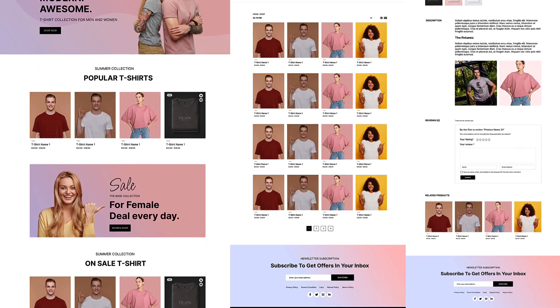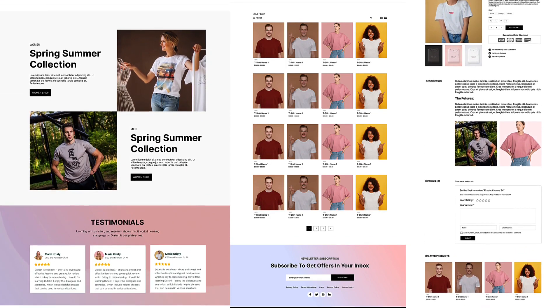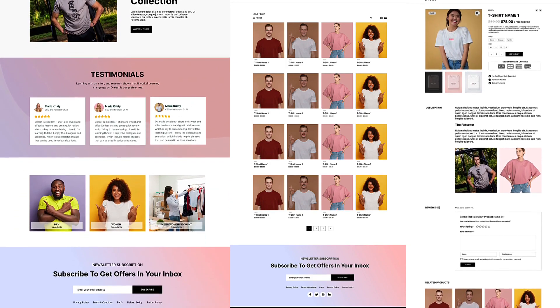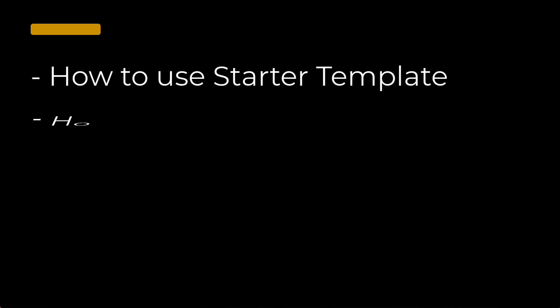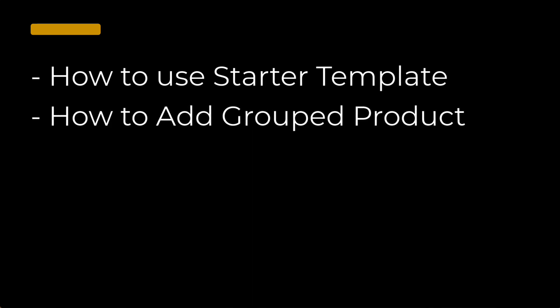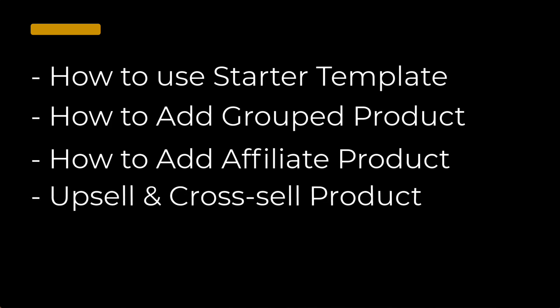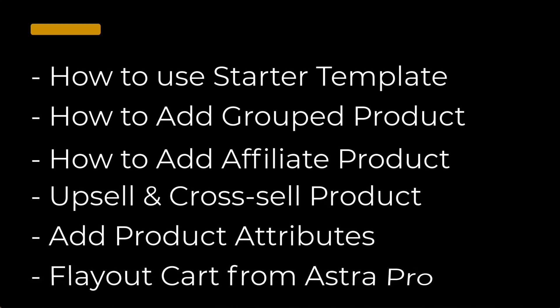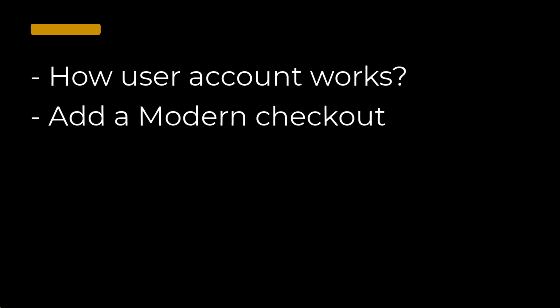In this tutorial I will convert this Figma design into WordPress, and I'll be using WooCommerce, Spectra — which is one of the most popular block editors — and Astra Pro. I'll cover how to use the Spectra template to speed up the process, how to add group products, affiliate products, upsell and cross-sell products, and how to create product attributes, and understand the fly-out cart from Astra Pro.